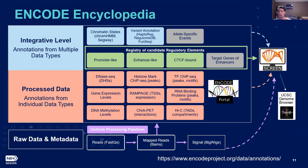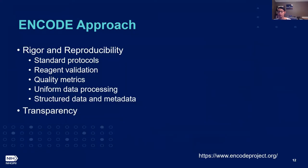For SCREEN, it lets you search genomic regions and tells you what annotations are found from thousands of experiments performed through the ENCODE program, and also provides tools for visualization. There are a couple of really important points about ENCODE's approach to these assays: there's a strong emphasis on rigor and reproducibility as well as transparency.